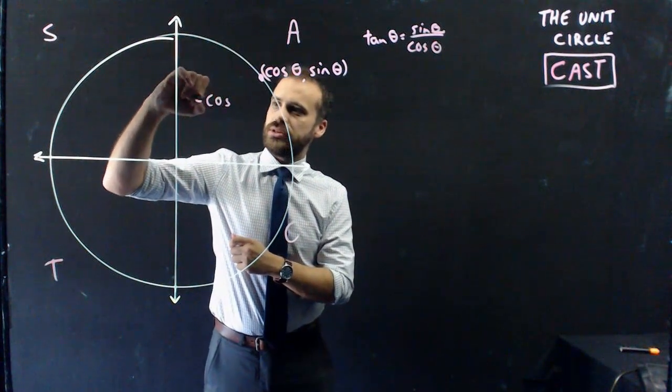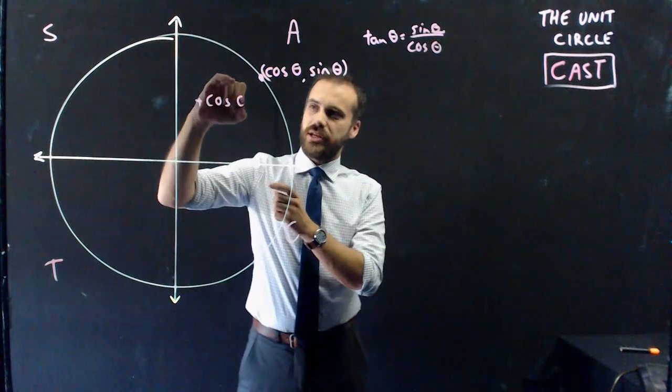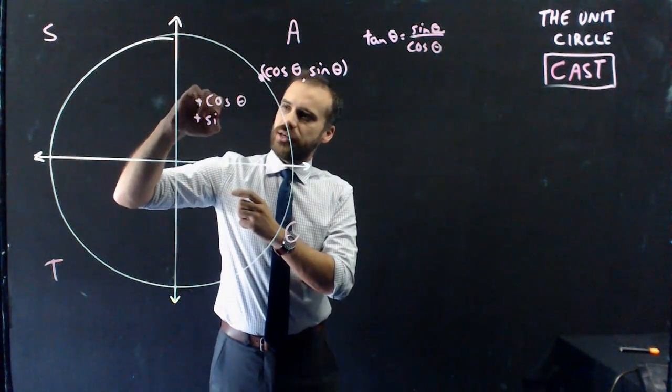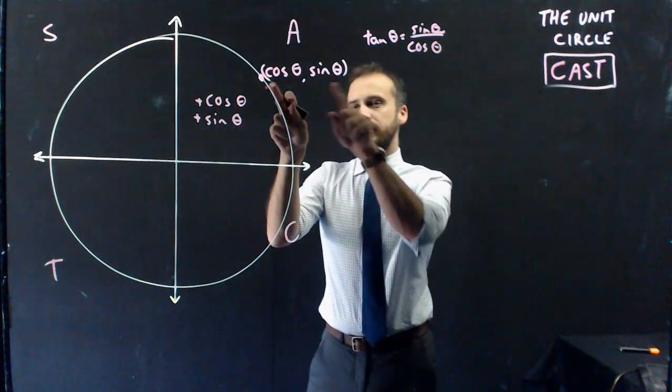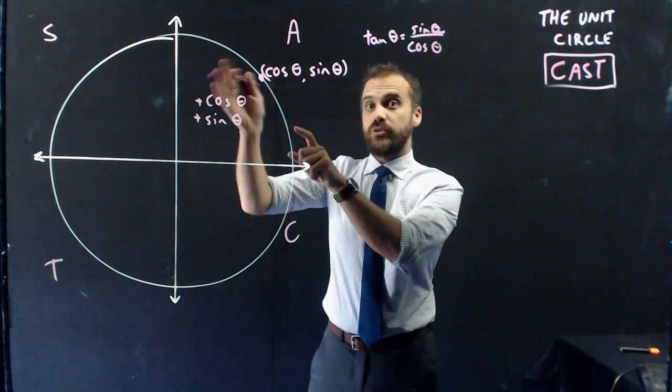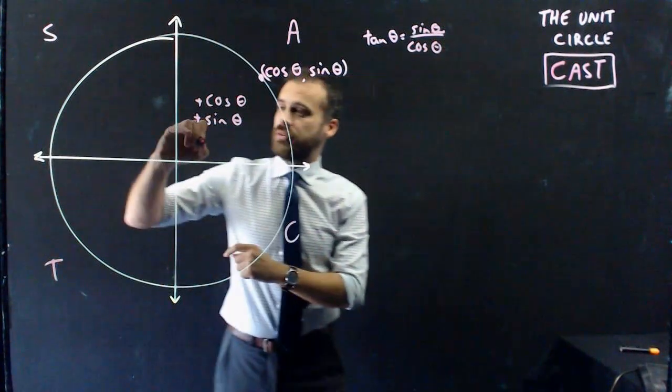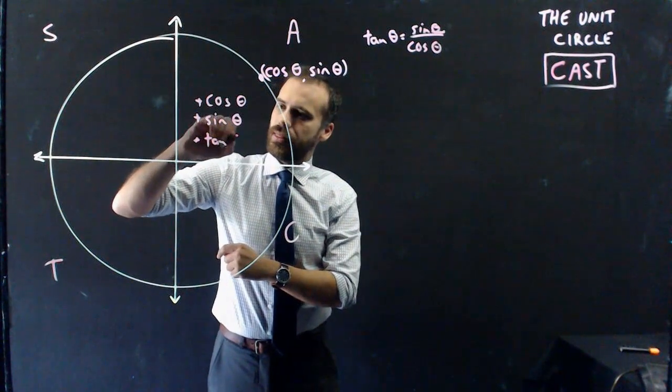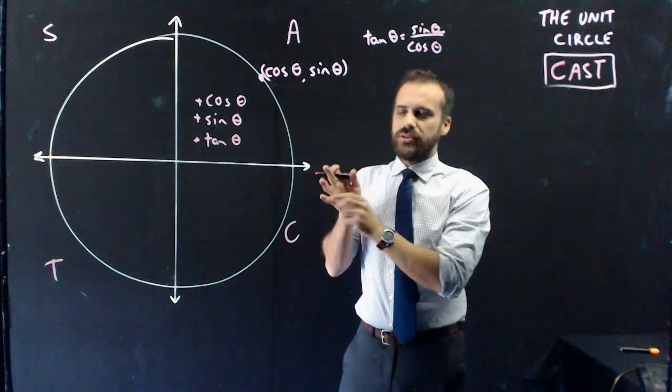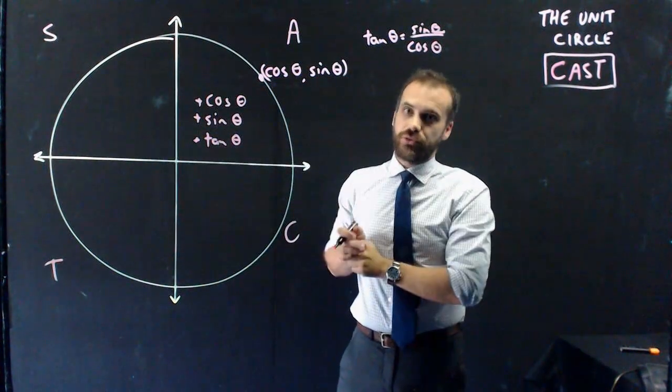So, cos is a positive value, cos theta. Sin is a positive value, because the x-coordinate and the y-coordinate in quadrant 1 is positive. And a positive divided by a positive is a positive, so all tan theta values would be positive in quadrant 1 as well.